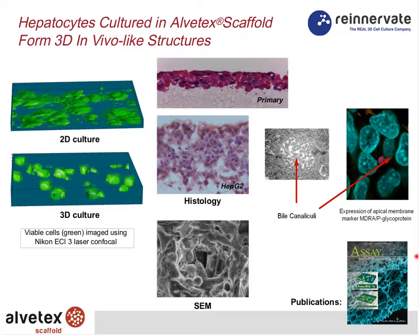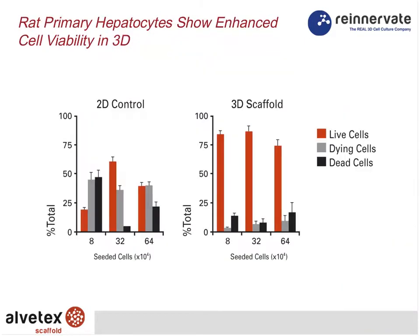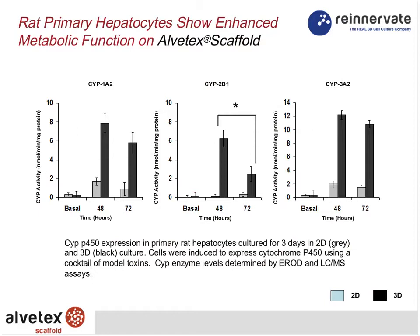Where cells come together, they form tight junctions, and between them will sometimes form a bile canaliculus. We can identify these structures using antibodies to apical membrane proteins such as the glycoprotein, showing the bile canaliculus structure. We also publish much of our work, and we're now getting many more independent publications from customers who bought the product and used it in their laboratory. In a short-term experiment with primary hepatocytes, we observed enhanced cell viability in 3D compared to 2D — this is a live-dead cell assay at different seeding densities, showing the proportion of live cells is greater in 3D.